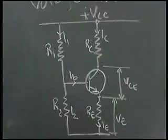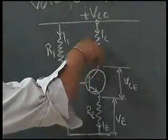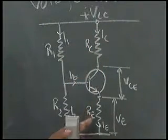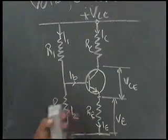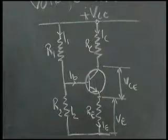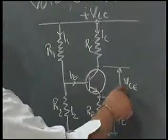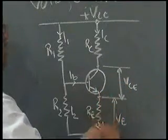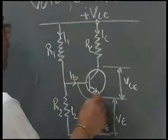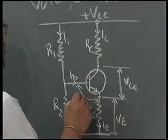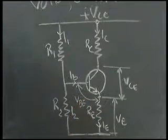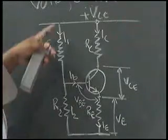RC is the collector load resistor, and RE is provided here for stabilization. We will find out how it acts in stabilization. Now here we have VCE and Ve, and one more voltage is V2. What is the voltage at R2? If we follow this path...